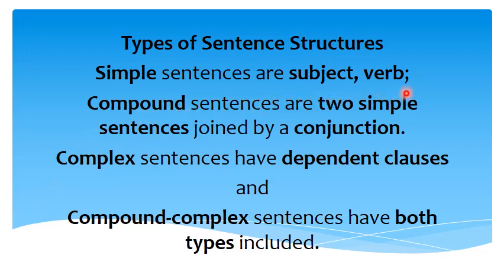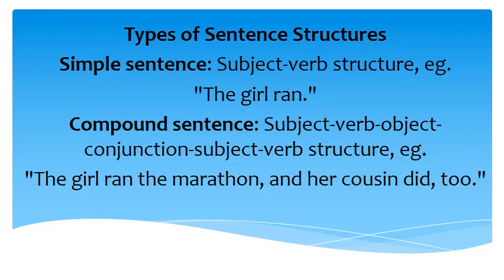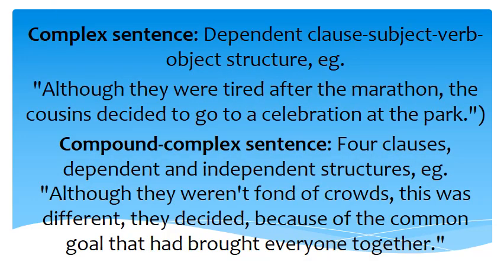Simple sentences follow a subject-verb structure. Compound sentences are two simple sentences joined by a conjunction. For example, the simple sentence structure: 'The girl ran.' The compound sentence structure: 'The girl ran the marathon, and her cousin did too,' where 'and' is the conjunction.